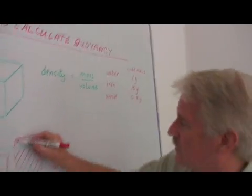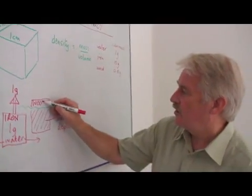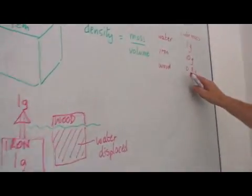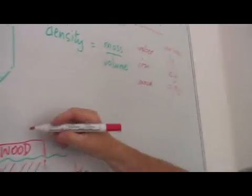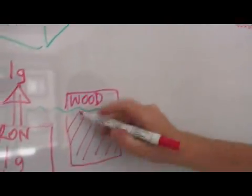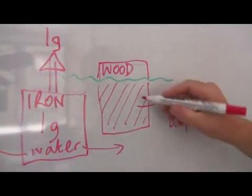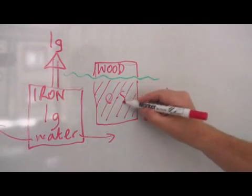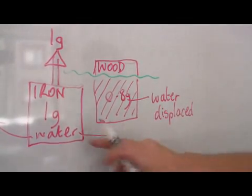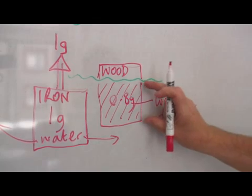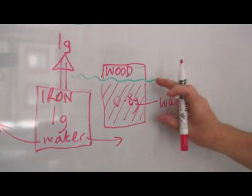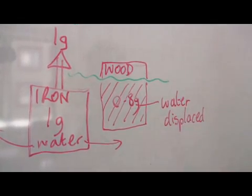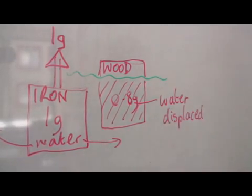This however appears to be wood. Because the wood all together only has this weight here. This amount of water has a mass of 0.8 grams. One gram is the whole cube, 0.8 grams is four fifths of the cube. And therefore one fifth of the wood stays above the water — the object floats.